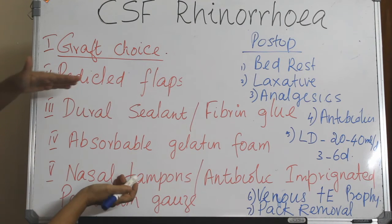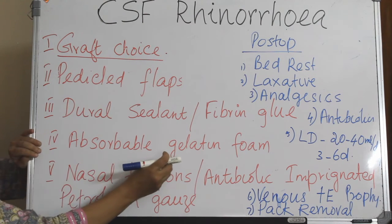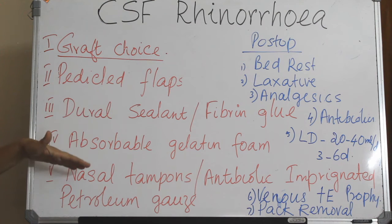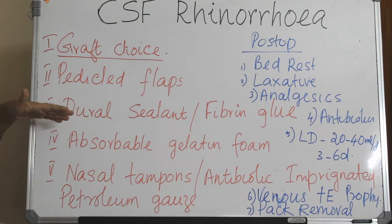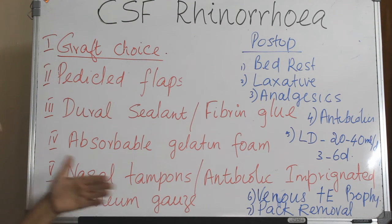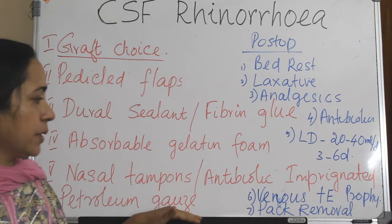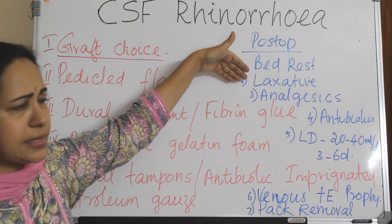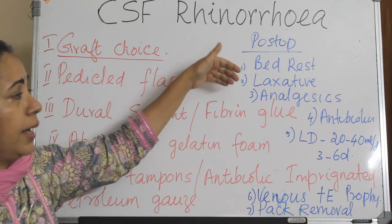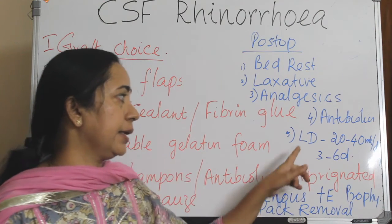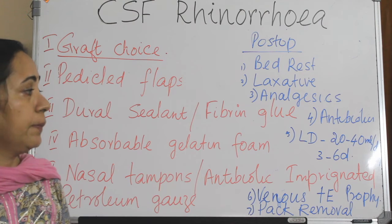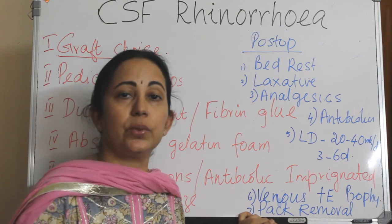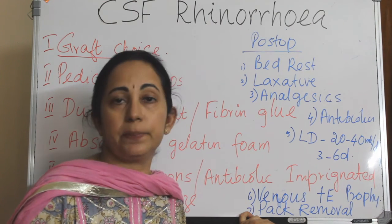Between the nasal pack and the fibrin glue, it is better to keep an absorbable gelatin foam so that at the time of pack removal, the stability of the reconstruction will not be disrupted. Pack the nose either with a nasal tampon or antibiotic-impregnated petroleum gauze, and the pack is removed at 5 to 7 days. Postoperatively: strict bed rest, laxatives to avoid straining, analgesics for postoperative pain, antibiotic prophylaxis, and a lumbar drain with drainage of 20 to 40 ml per day for 3 to 6 days. Venous thromboembolism mechanical prophylaxis should also be done. Some institutions keep the pack for 7 to 10 days.